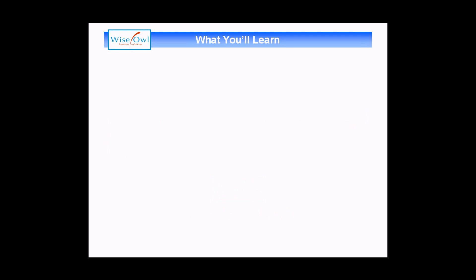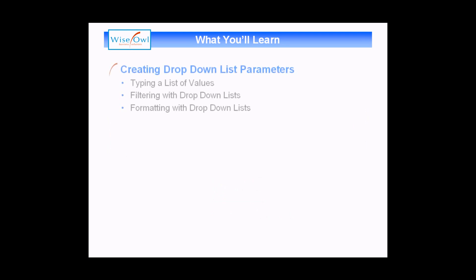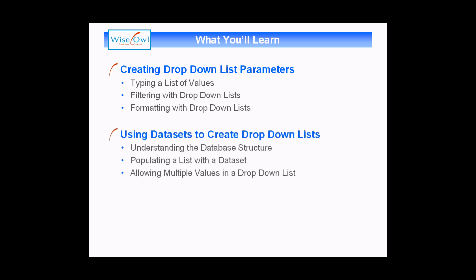We'll start by showing you how to create a basic drop-down list by typing in a list of values. We'll then show you how you can both filter and format a report using those drop-down list parameters. When we've covered that, we'll move on and show you how you can use a dataset to populate a drop-down list, starting by understanding the database structure to make sure you build the correct datasets. Then how you can simply populate a drop-down list using the dataset you've created, and also how you can allow multiple values in a drop-down list and still make sure that your filters will work.